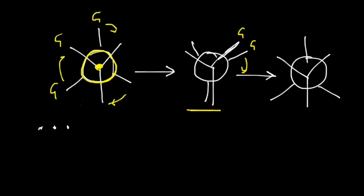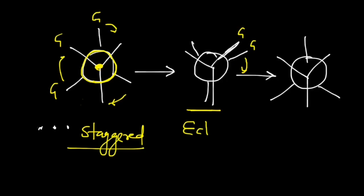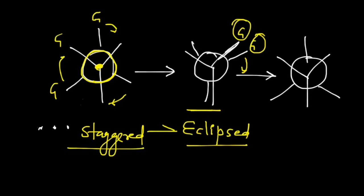When the groups are far apart, we call it the staggered position. When there is a group behind another group — that is, there is congestion — it is called the eclipsed position. The name is fitting because the front group is eclipsing the group behind. So there are two conformations: staggered and eclipsed, and due to rotation these two keep converting into one another.